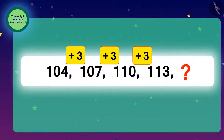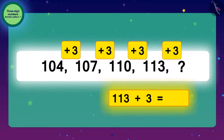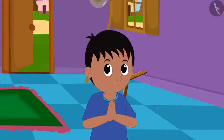To find the next number, we have to add 3 to 113. So, if we add 3 to 113, the next number would be 116. This will be the answer to the code.